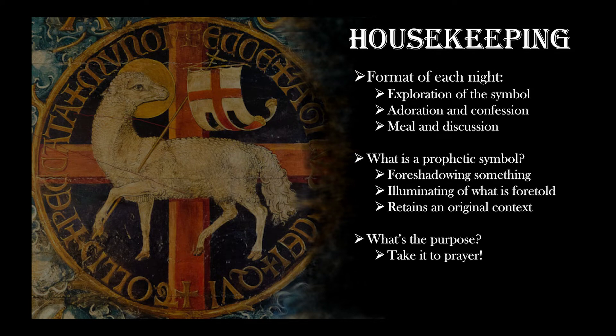The next thing we need to talk about is a little bit of housekeeping. First, we've got the format. So what we're in right now is kind of the exploration of the symbol phase, where I explain what's going on, and then at the end we have the opportunity to do a Q&A. The next segment of each night is going to be adoration, and hopefully confession every night. We'll be adoring the Lord for half an hour, then repose the blessed sacrament, and move on to an opportunity for community time, sharing a meal together and getting to know one another.